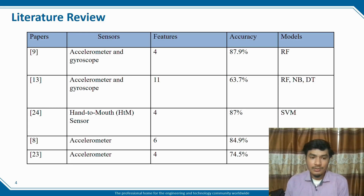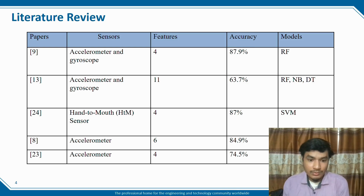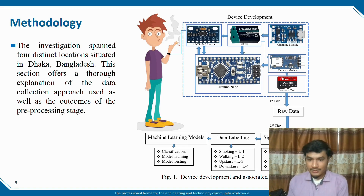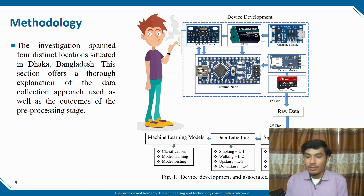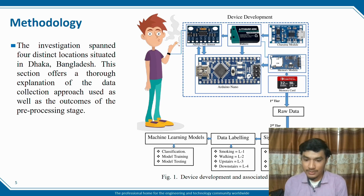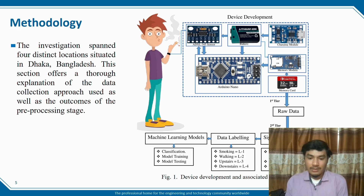The investigation covers four distinct locations in Dhaka, Bangladesh. This section explains the data collection approach and preprocessing stages. To develop our device, we use an Arduino Nano, ADXL 345 sensor, battery, charging module, memory module, and storage device as a memory card. In the first tier, we get raw data from the memory card. In the second tier, we work with signal acquisition, which includes data filtering, normalization, data segmentation, and feature extraction. Data labeling assigns: smoking as level 1, walking as level 2, upstairs as level 3, and downstairs as level 4. Then the machine learning models handle classification, model training, and model testing.